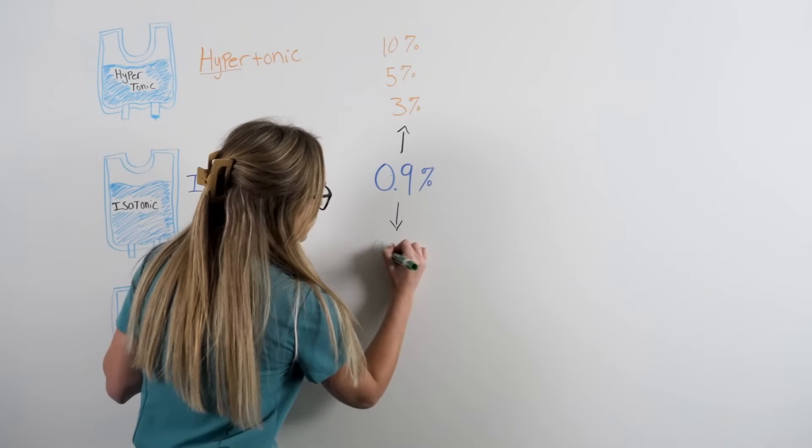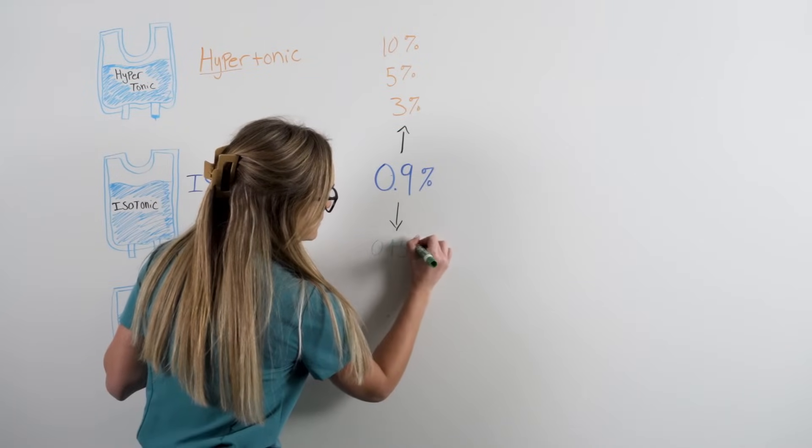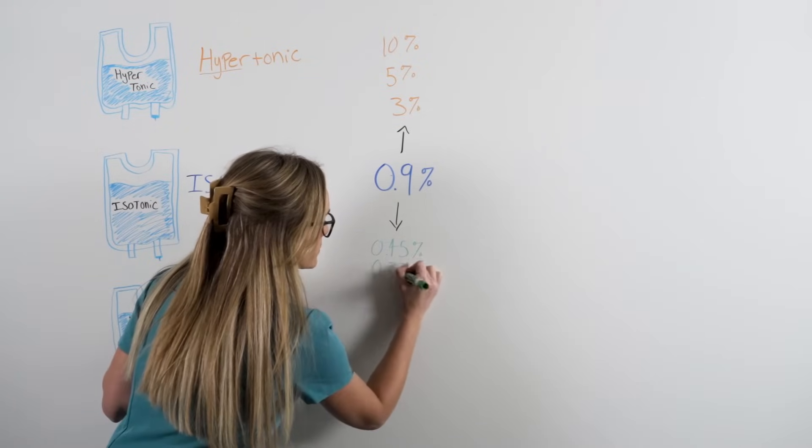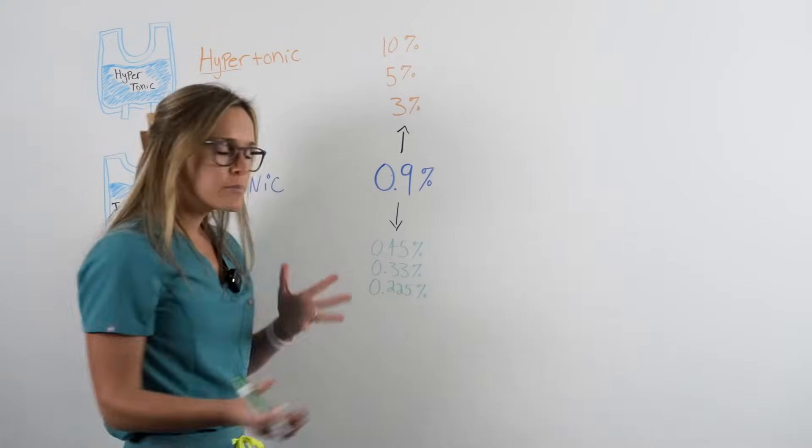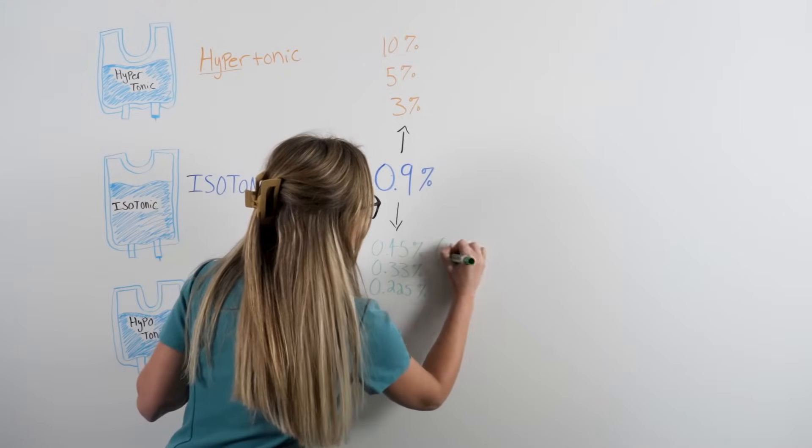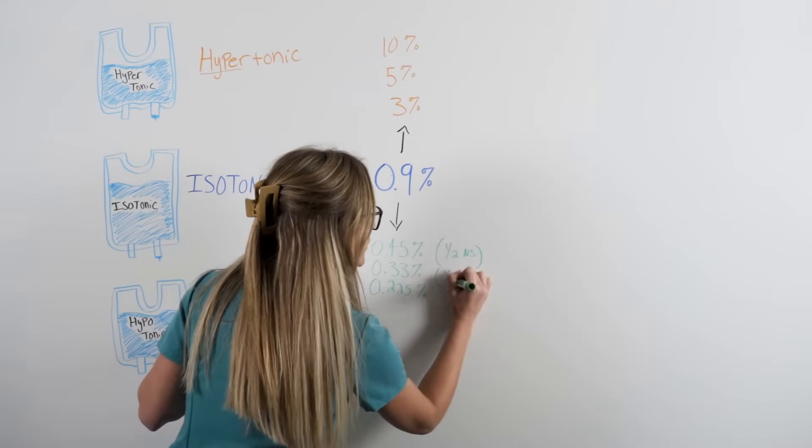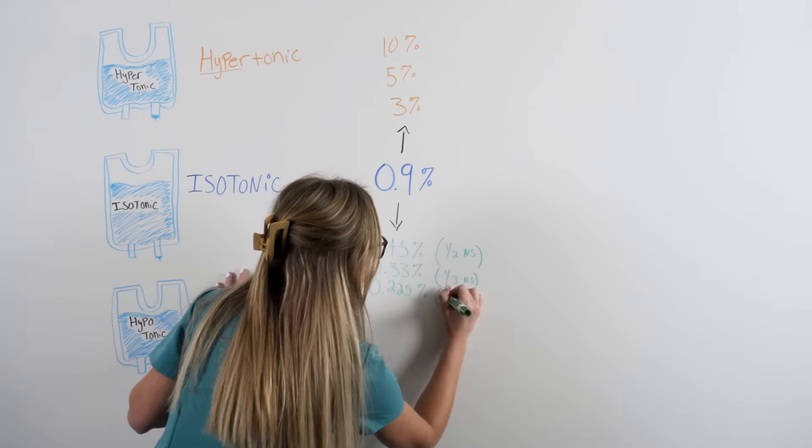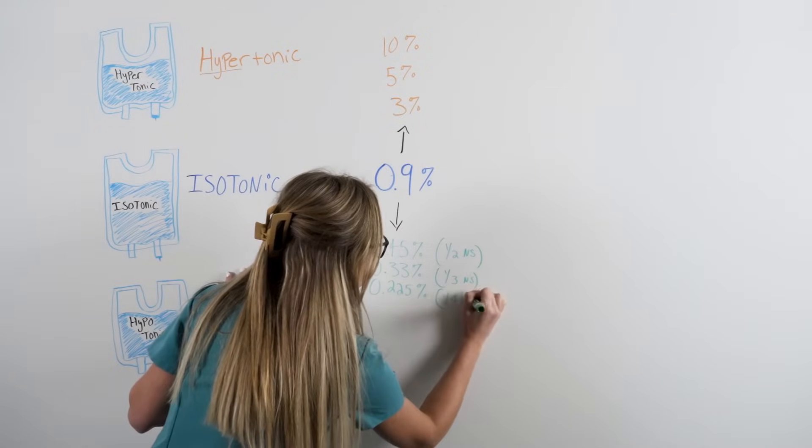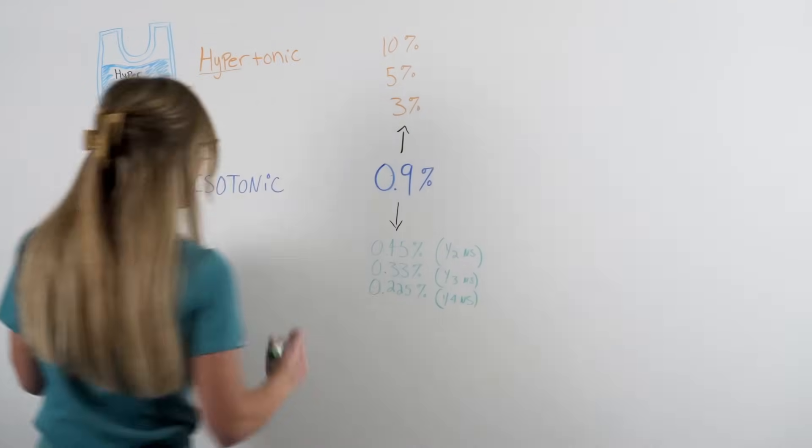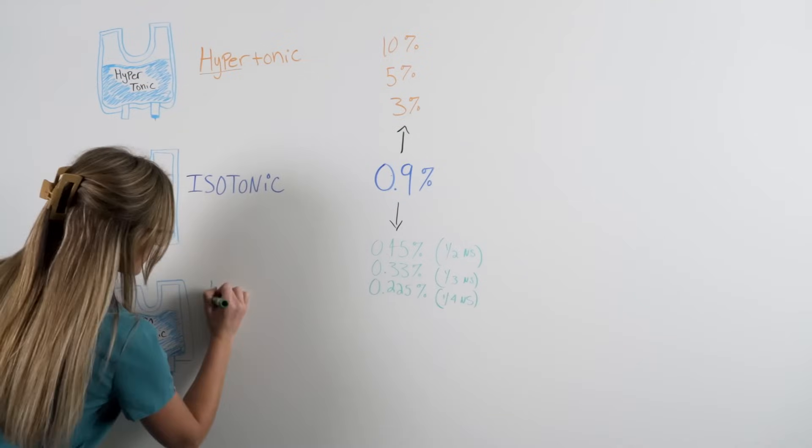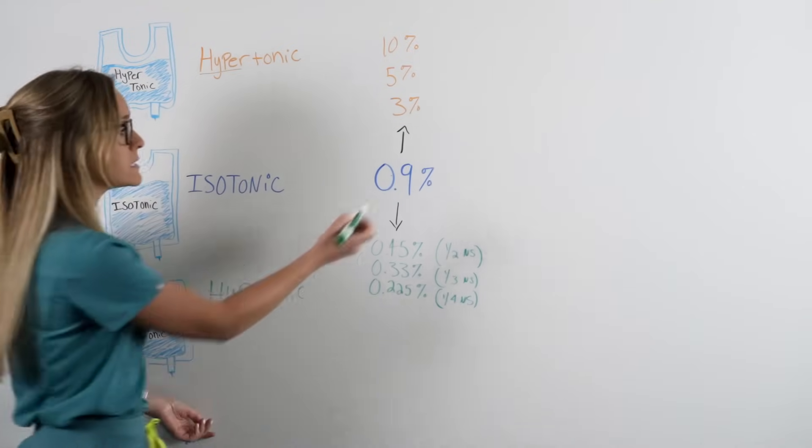Things like 0.45%, 0.33%, and 0.225%. You also may hear this called half normal saline, one third normal saline, and one fourth normal saline. These are lower numbers than our home base number, making these hypotonic solutions. And hypo literally means low.